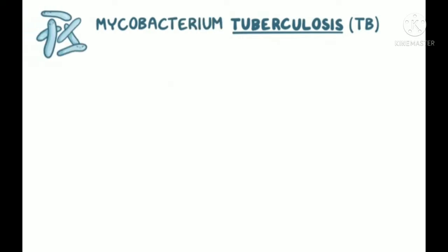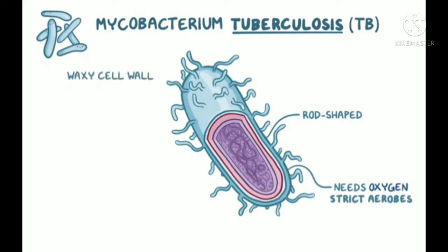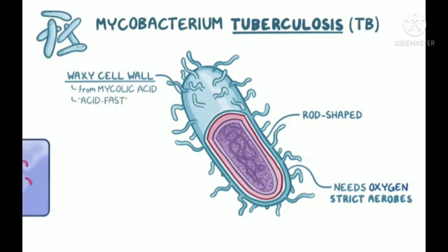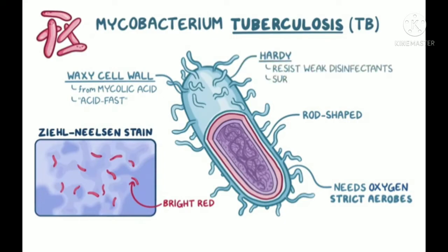Mycobacteria are an interesting bunch. They're slender, rod-shaped, and need oxygen to survive — in other words, they're strict aerobes. They've got an unusually waxy cell wall, which is mainly a result of the production of mycolic acid. Because of this waxy cell wall, they're acid-fast, meaning they can hold onto a dye in spite of being exposed to alcohol, leaving it bright red-colored when a Ziehl-Neelsen stain is used. The wall also makes them incredibly hardy, allowing them to resist weak disinfectants and survive on dry surfaces for months at a time.